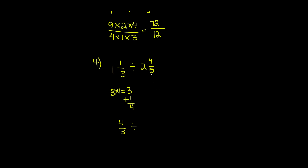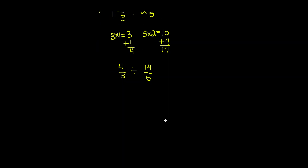Now convert two and four-fifths: multiply the denominator five by the whole number two — five times two is ten — then add the numerator four, giving us fourteen. So fourteen over five is our improper fraction, and the denominator five stays the same.